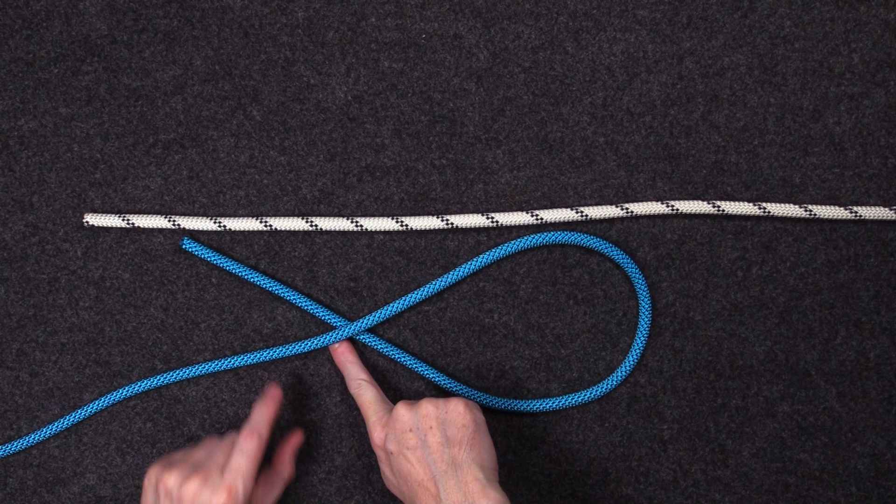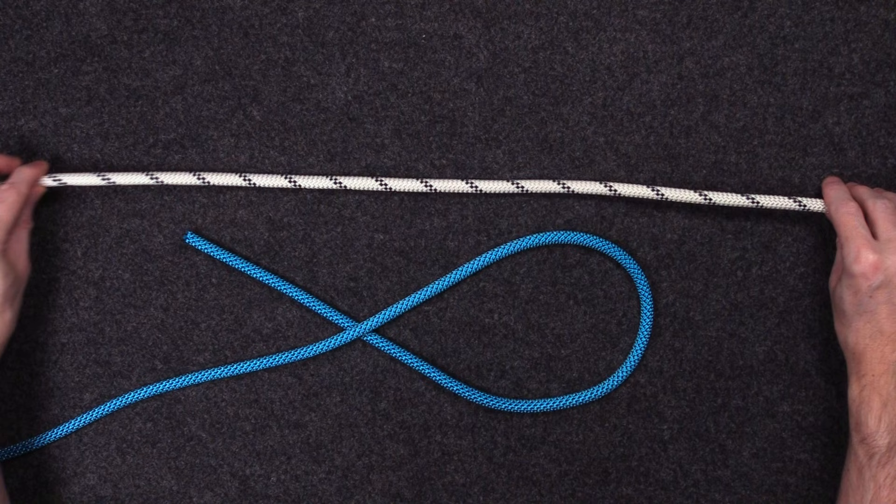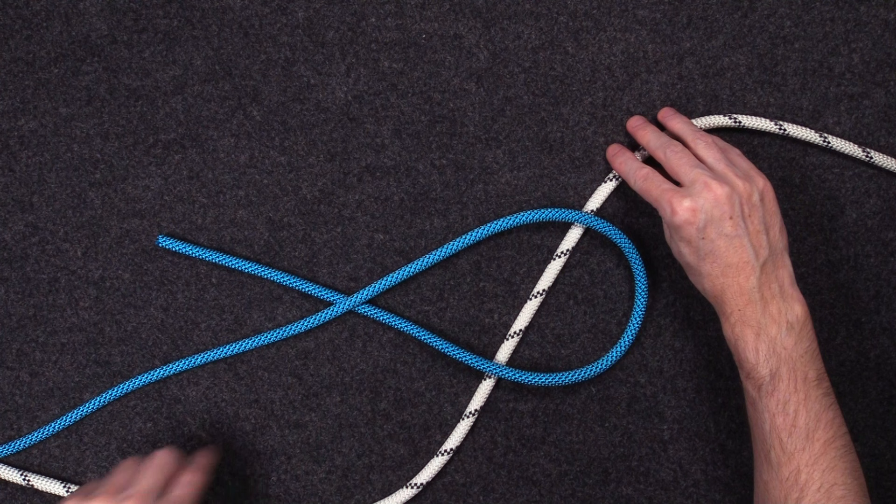We then take your other rope and we're going to pass that under the loop so that it bisects the loop on the bottom side, both sides on the bottom side.